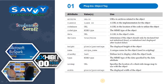These are the attributes used for adding audio plugins into the object tag: archive, class ID, code base, code type, data, declare, height, name, standby, type, use map, and width.